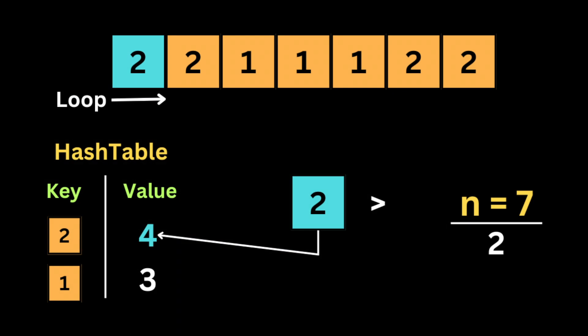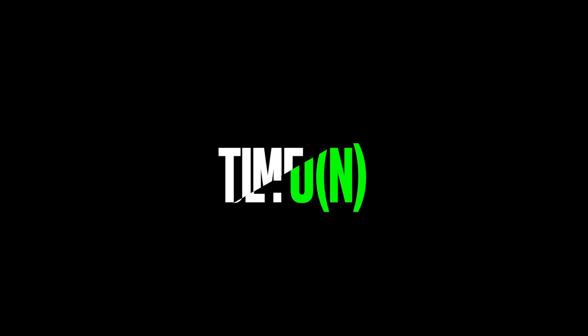We then loop over the array a second time. In this second loop, we check whether the value of each key in the hash table is bigger than the size of the array divided by 2. In this example the result will be 2, because the number of appearances of 2 is bigger than n divided by 2.